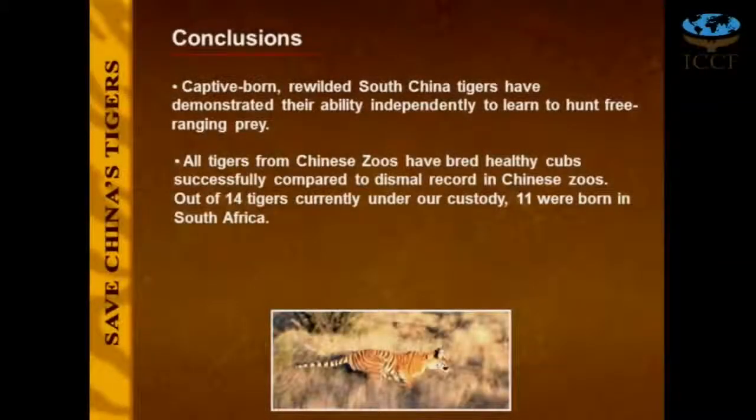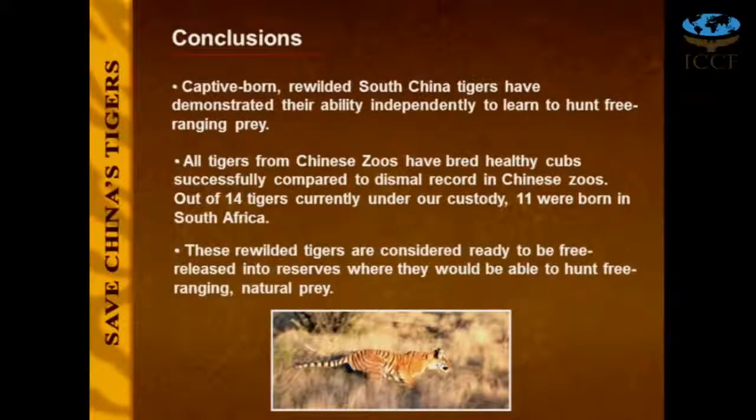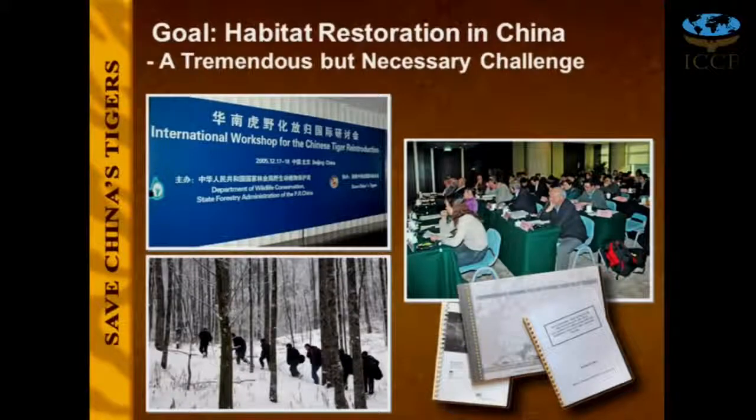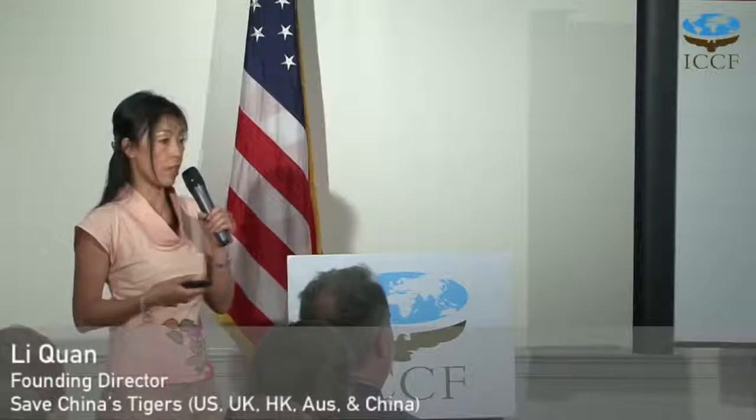All the tigers from China have bred, and we're on to the next generation of breeding between tigers born in South Africa. We now have 14 tigers under our care, and 11 were born in South Africa. All of them, except the newborns from last year, are ready to go back to China. China is our next challenge, and it's taken much longer than expected. We've been working with the government, trying to identify suitable sites, and after the sites are approved, we can start restoration work. We hope to succeed probably next year.